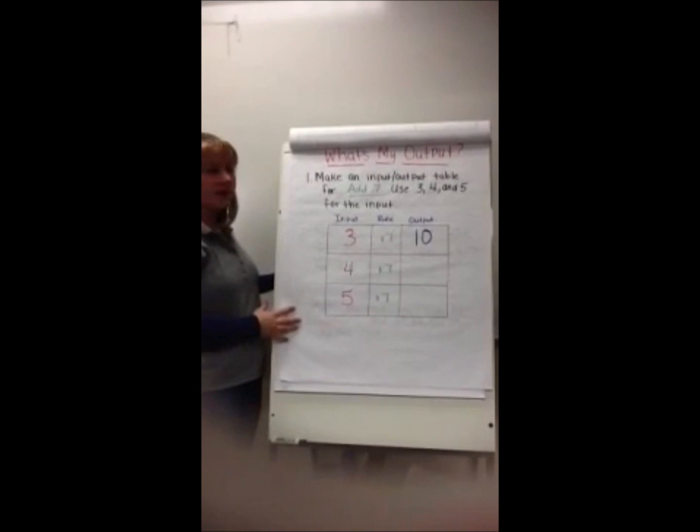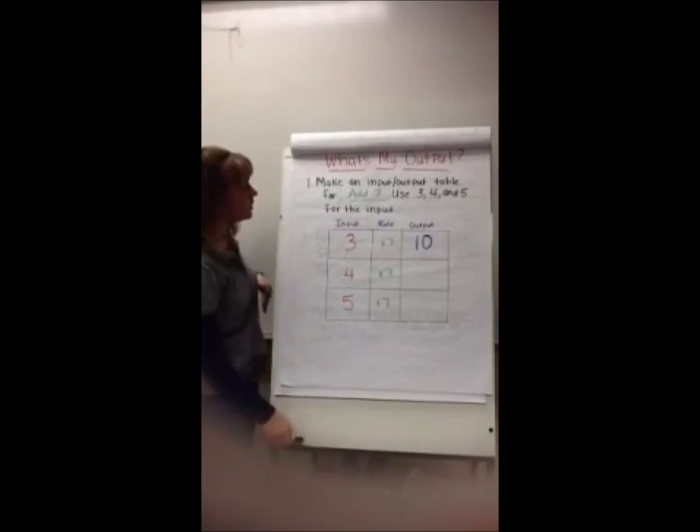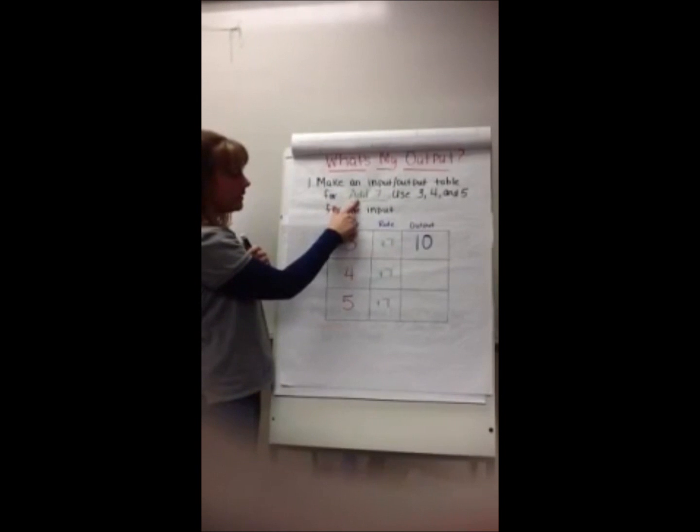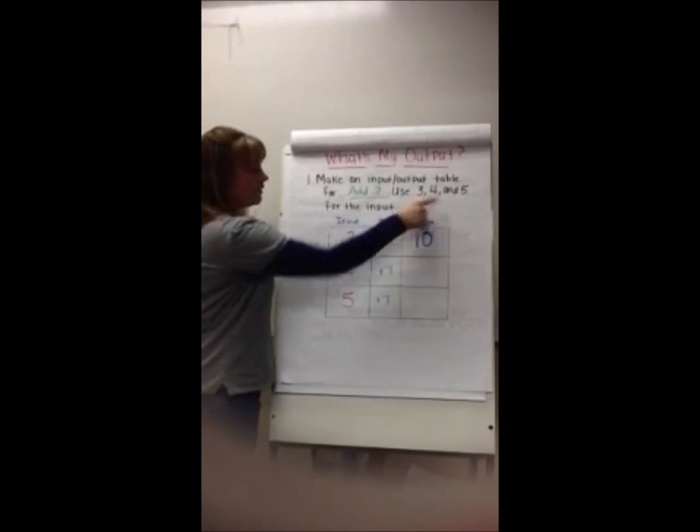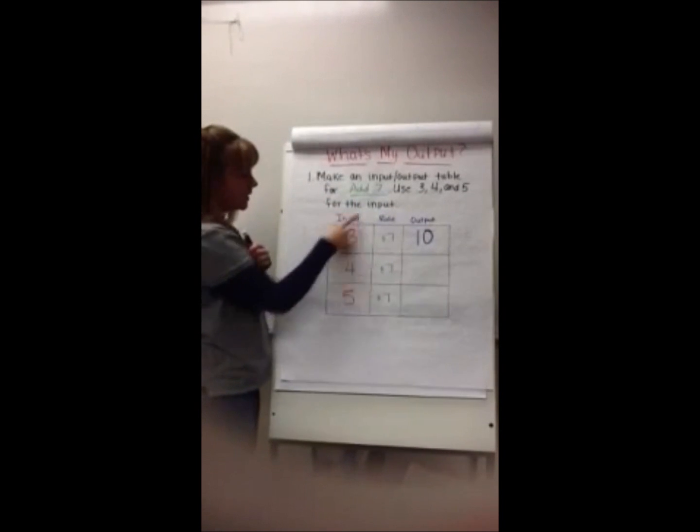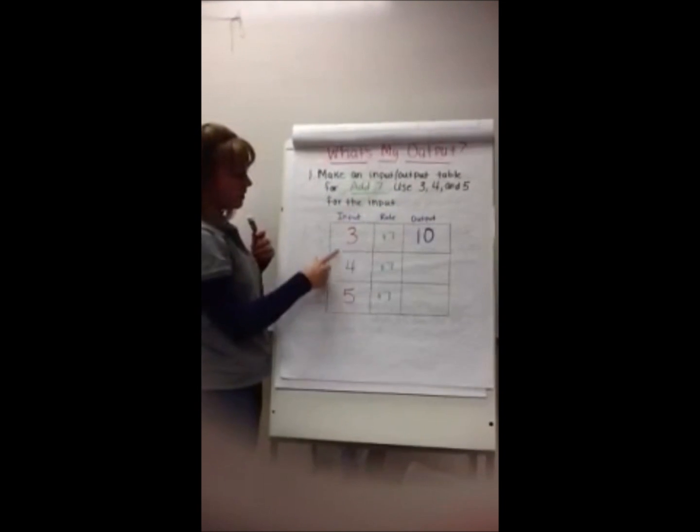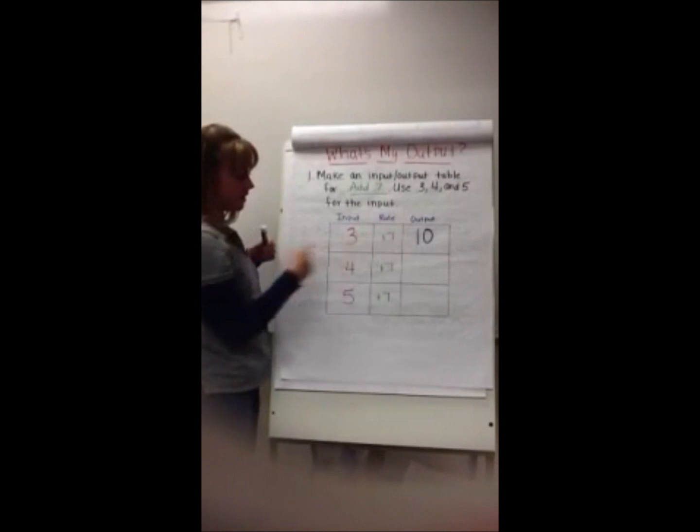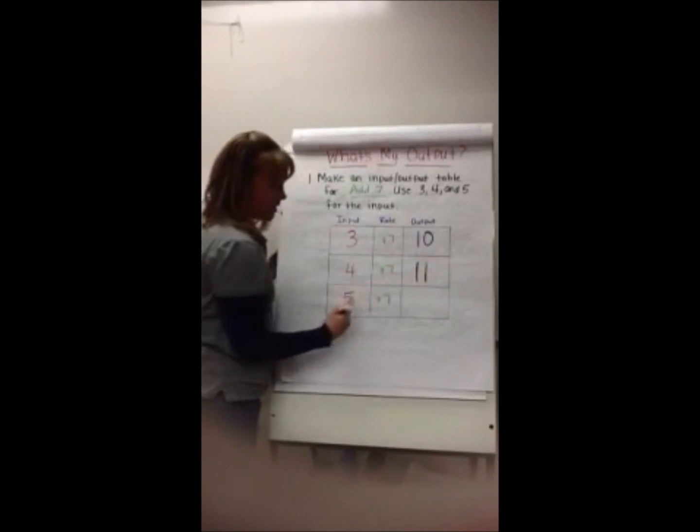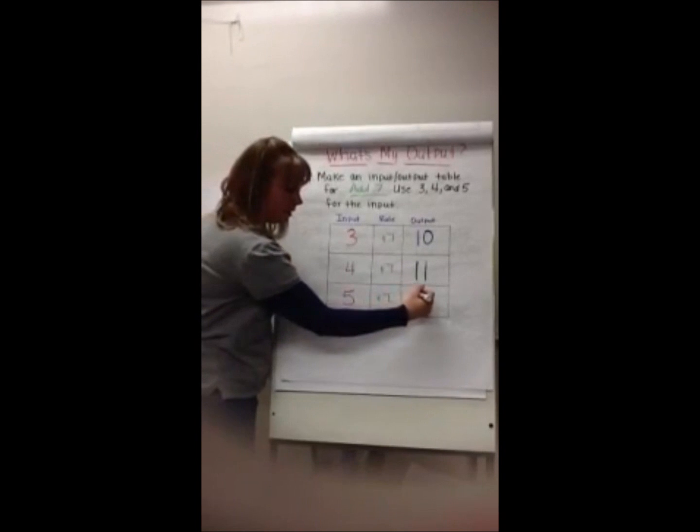So we're going to do this one together. Make sure you put it in your math journal. We have make an input-output table for add 7. Use 3, 4, and 5 for the input. So add 7 is our rule. 3, 4, and 5 is our input. So we have 3 plus 7 is 10, 4 plus 7 is 11, and 5 plus 7 is 12.